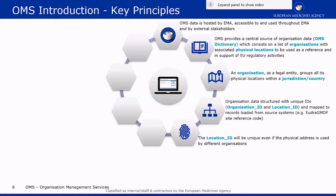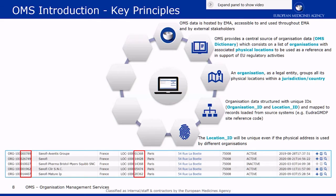Location IDs are going to be unique even if a certain physical address is used by different organizations. We can have the same physical location being used by all sorts of organizations, but what is important is not only the location details but also the relationship with its organization. So in a case where five records represent the same physical location but are being used by five different legal entity types, a new location ID will be generated for each.